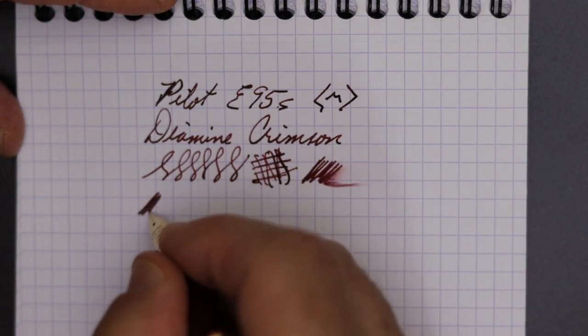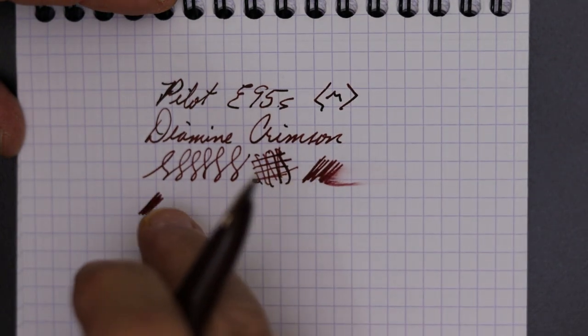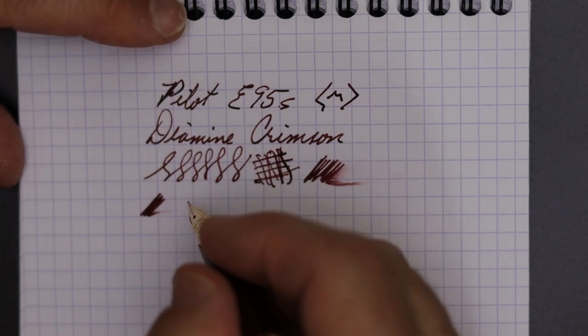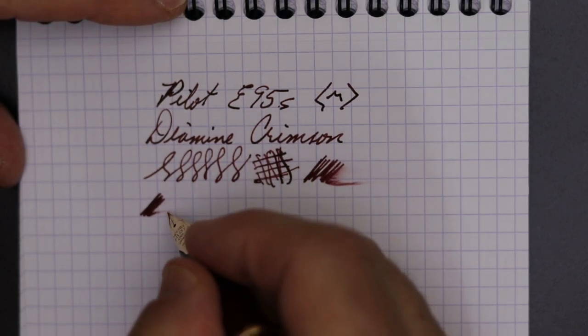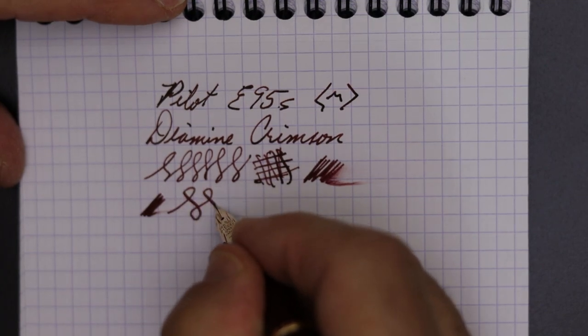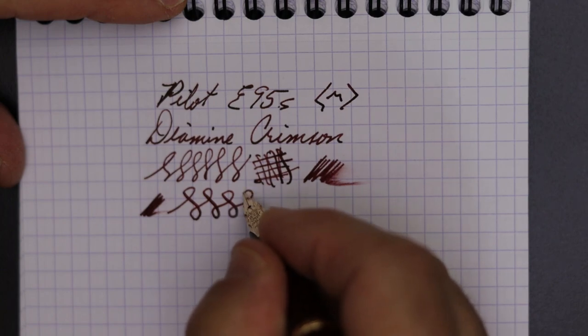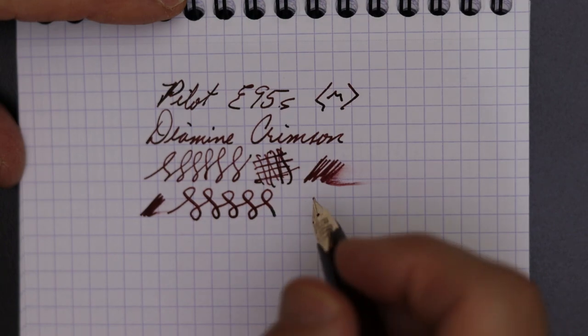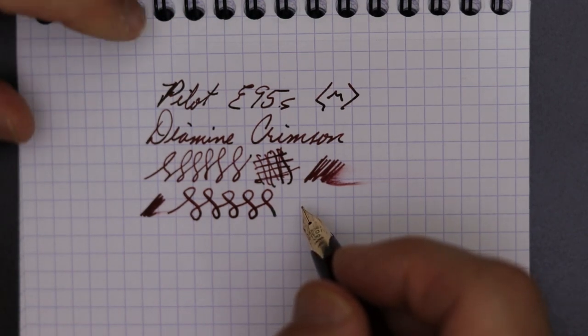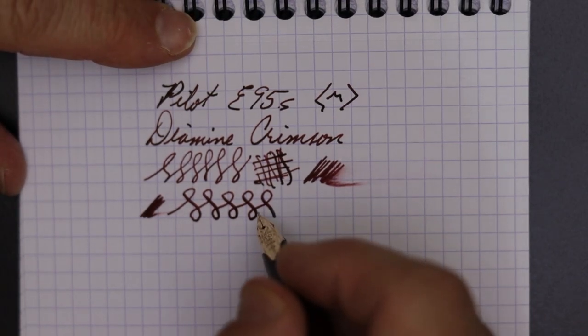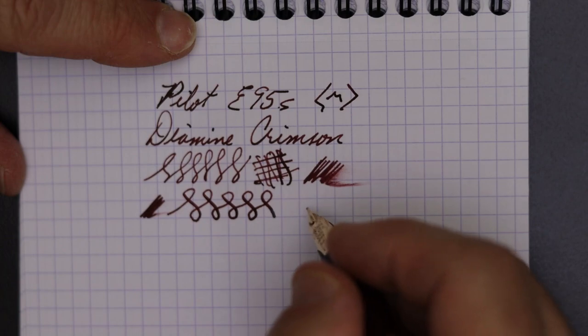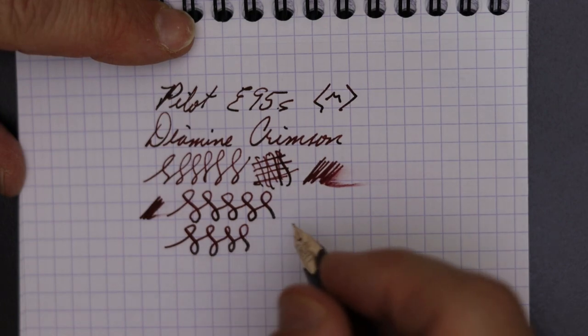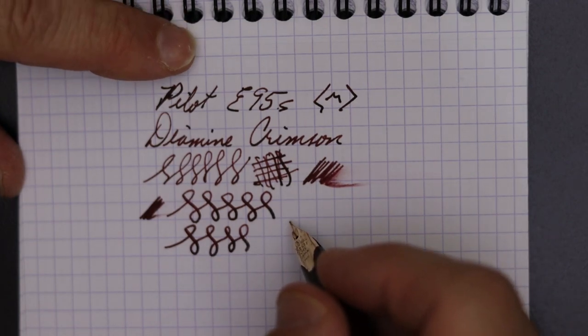Dry time. Let's see a dry time. One, two, three, four, five. I mean, five seconds. This thing is dry. How about line variation? Yeah, you can get some out of that. But again, it's a softer nib, so you want to be careful that you don't bend it out of shape. Mess up those tines. But you can get a little bit.